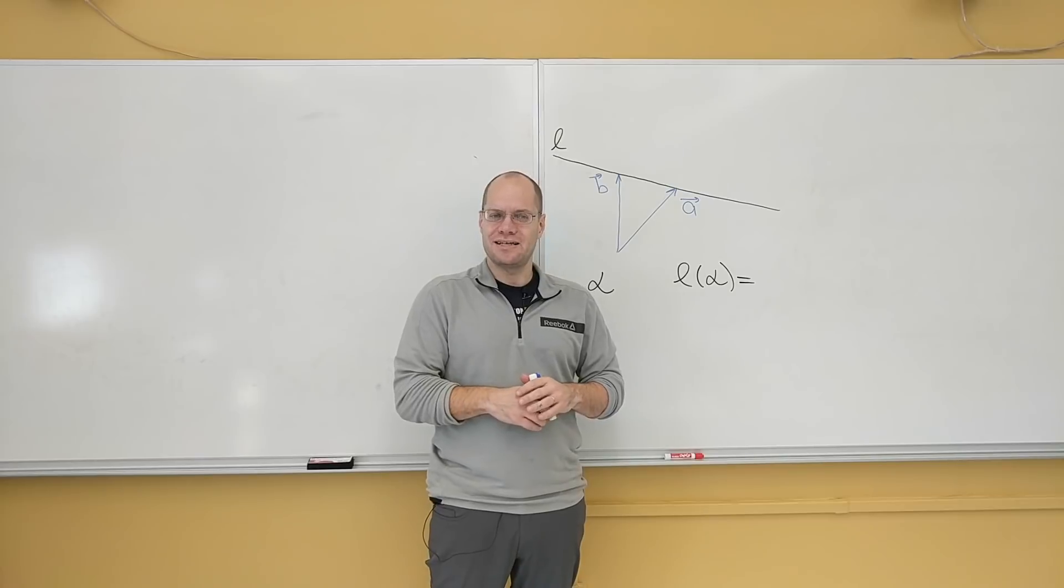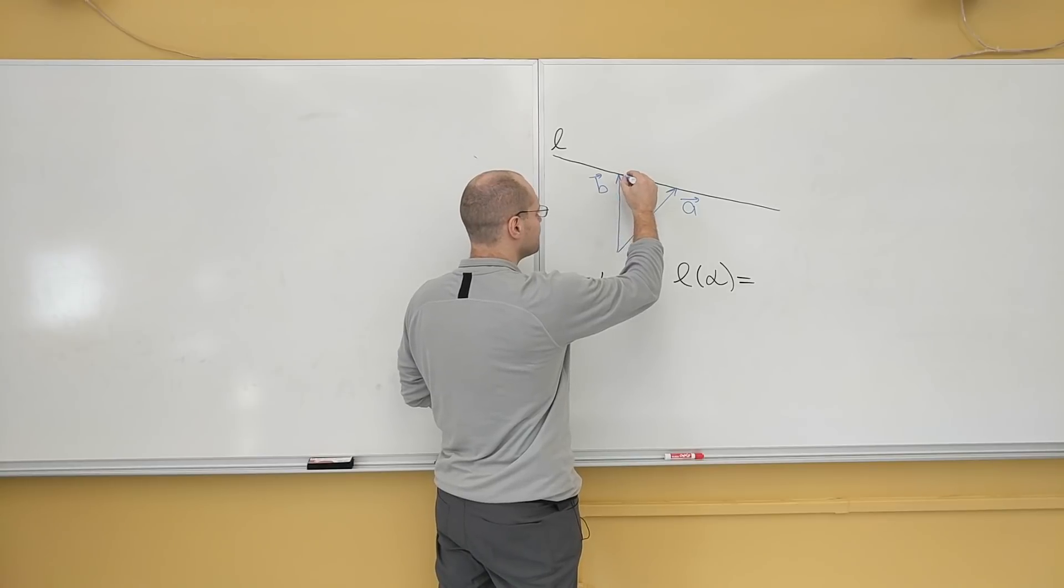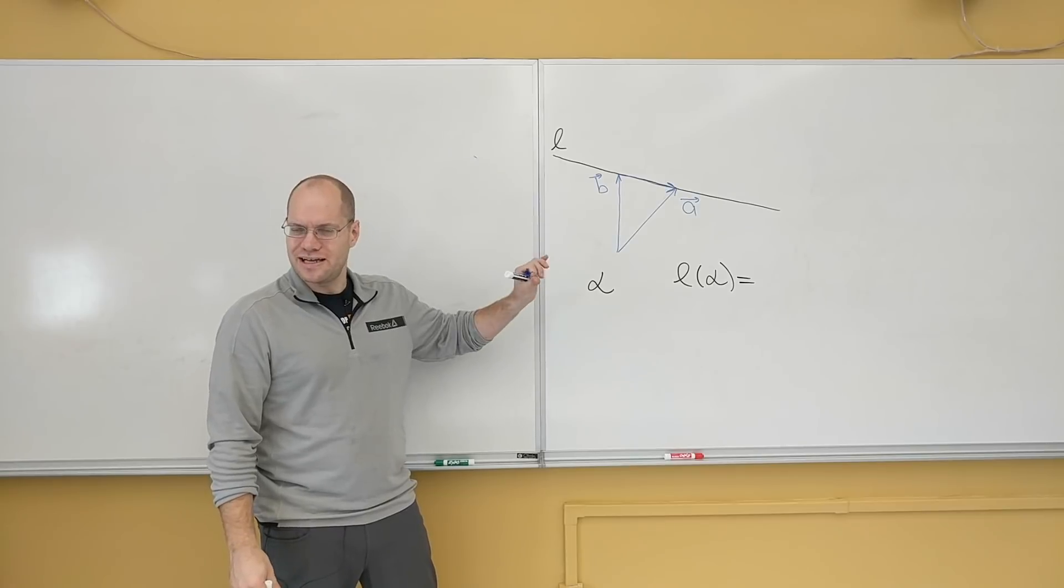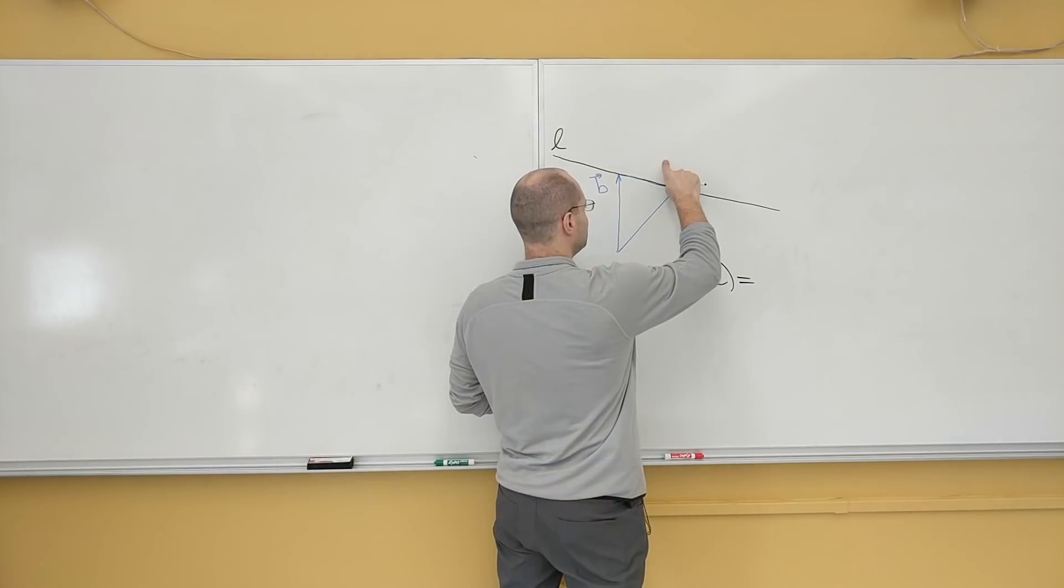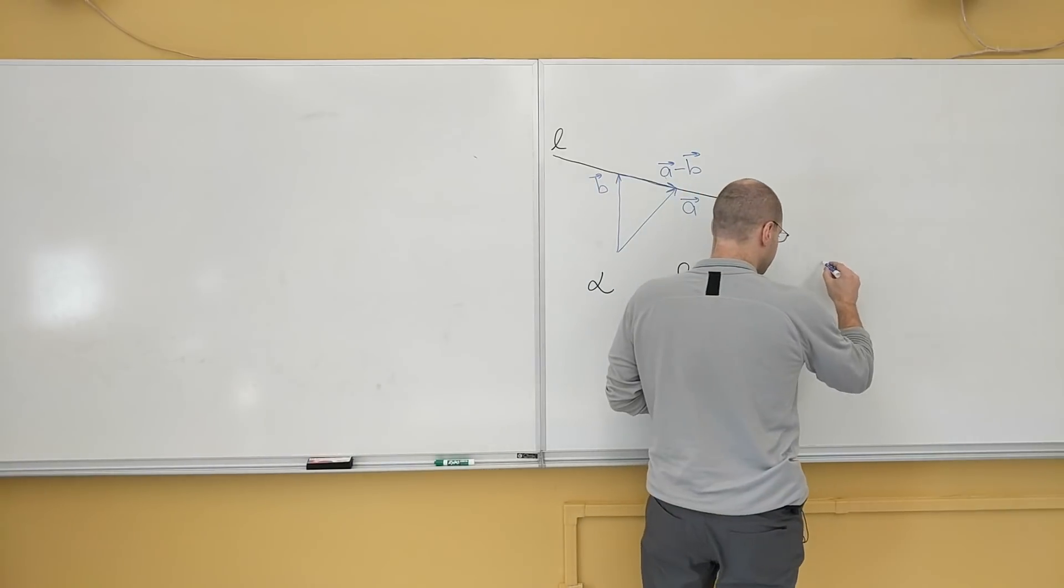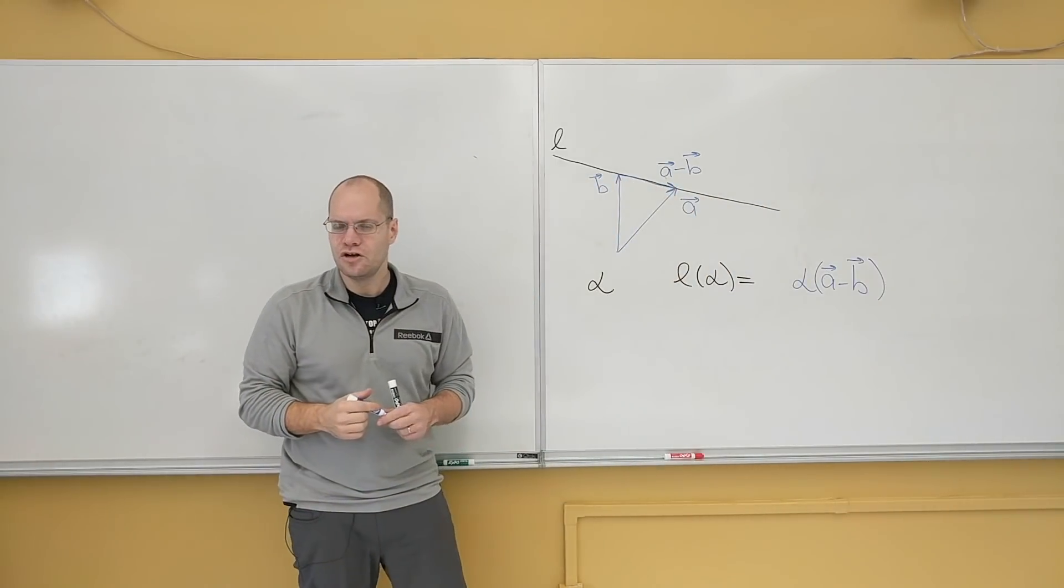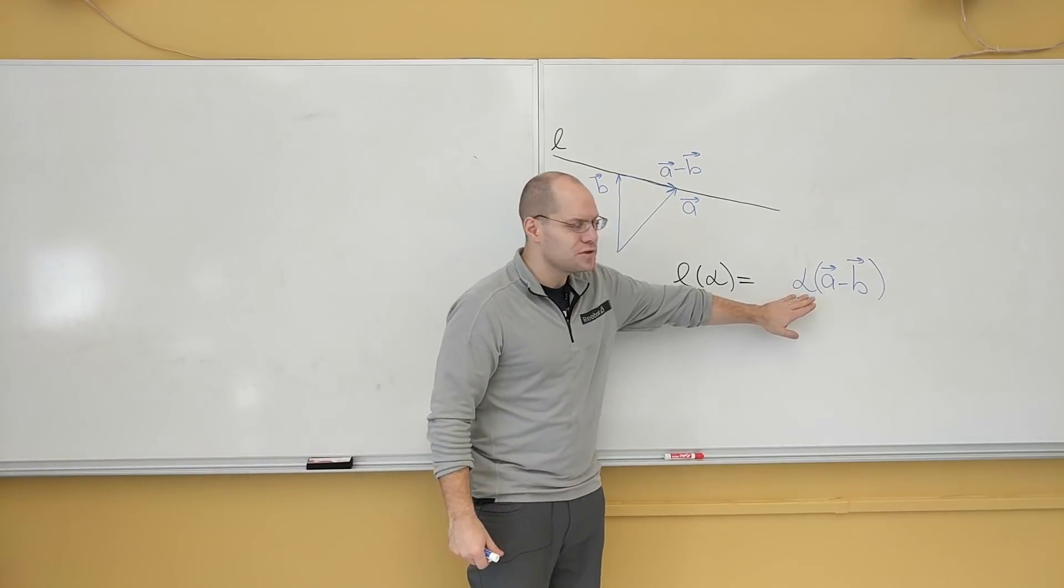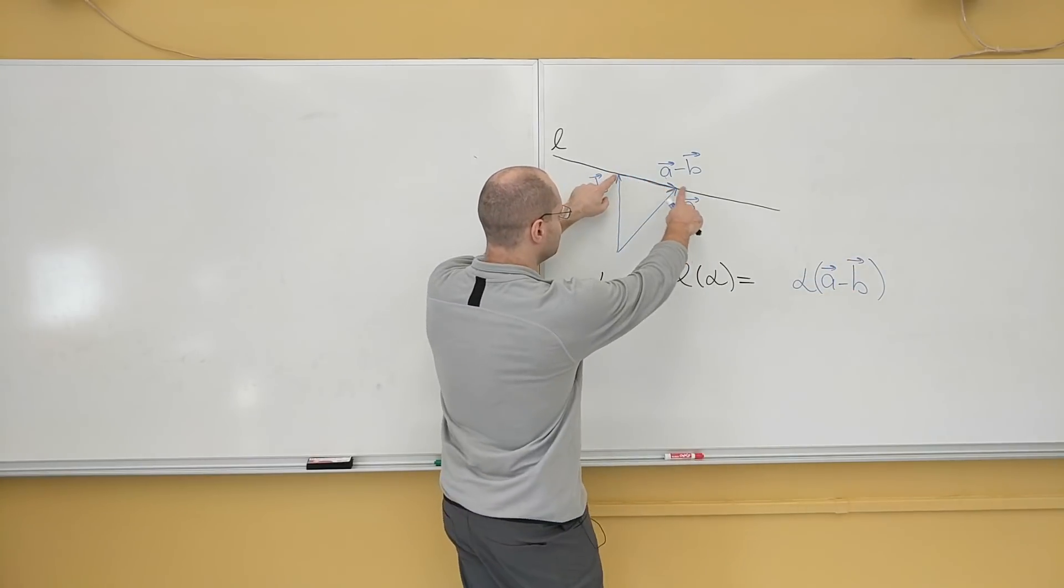So the suggestion was b minus a times alpha. Well, let me draw b minus a. Because all you have to do is connect the tips. And that's a minus b. When you connect the tips, the only question that remains is whether it's a minus b or b minus a. You said b minus a. I'm going to use a minus b. And then I'll pre-multiply by alpha. Let's take alpha equals 2. When we have alpha equals 2, this becomes twice a minus b. So it's twice this vector.